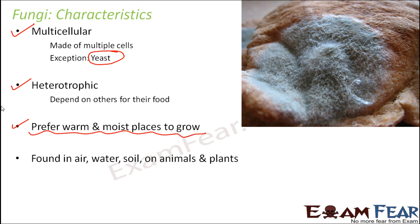Fungi are found in air, water, soil, animals, and plants — they are actually found in a lot of places. When we talk about the nutrition of fungi, some of them are saprotrophic while some other fungi are parasitic as well.